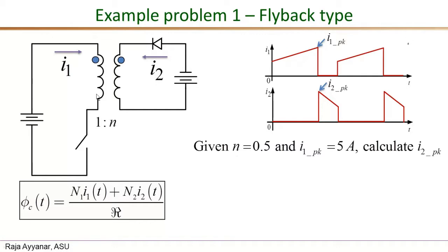The problem gives us a turns ratio n = 0.5, defined as N2 over N1, and also the peak value of the primary current I1_peak. The problem asks us to calculate the peak value of the secondary current. I1_peak is given as 5 amperes — that is the value of the primary current at the instant when the switch turns off, which I'll call instant T1.